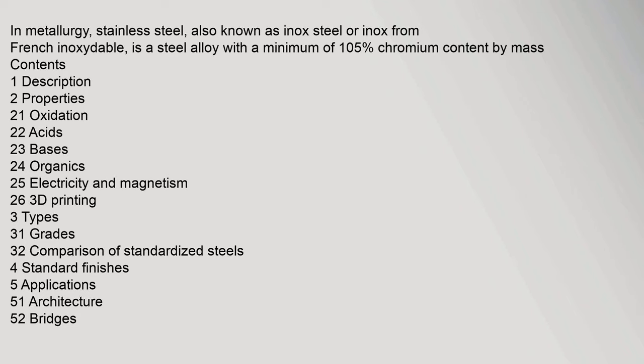In metallurgy, stainless steel, also known as inox steel or inox, is a steel alloy with a minimum of 10.5% chromium content by mass. Contents include: description, properties (oxidation, acids, bases, organics, electricity and magnetism, 3D printing), types (grades, comparison of standardized steels), standard finishes, and applications (architecture, bridges).